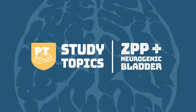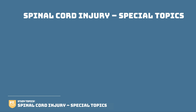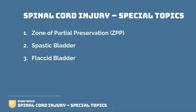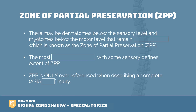Hello and welcome to Study Topics. This week we are covering spinal cord injury special topics. These special topics are going to be a little bit unique — we're going to go over the zone of partial preservation, spastic bladder, and flaccid bladder. You are going to fill in the blanks or sometimes pick the correct wording in the sequence, we'll then talk about it. For the zone of partial preservation, we have three fill-in-the-blank questions.